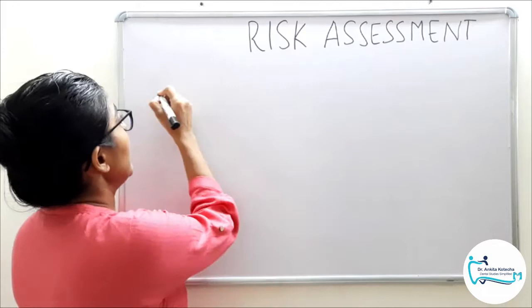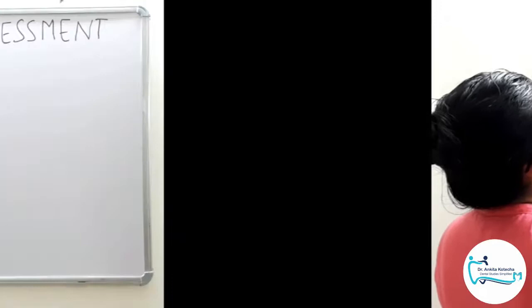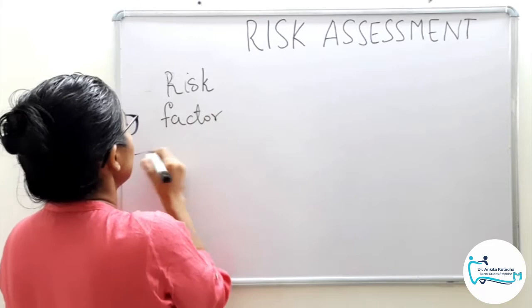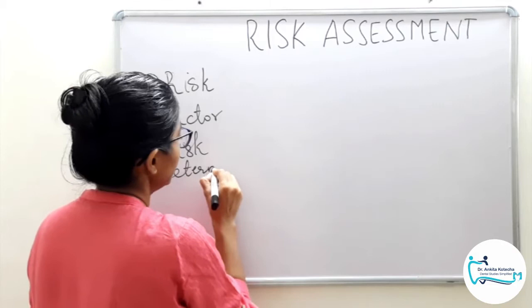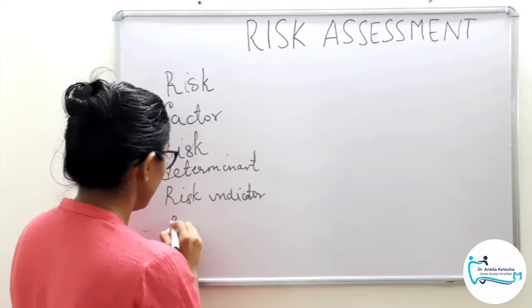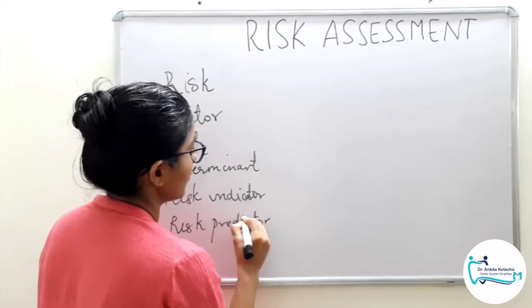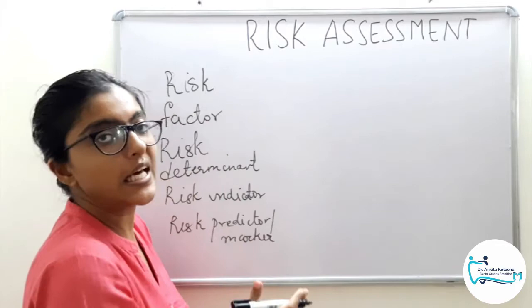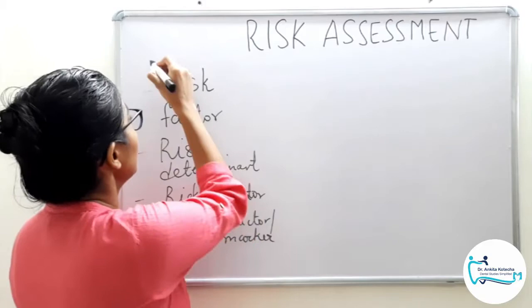First, we will enlist the various terminologies that are used interchangeably. First is Risk Factor. Second, Risk Determinant or Background Characteristic. Third is Risk Indicator. And the fourth and final is Risk Predictor or Marker. These are the four terminologies used interchangeably that are confusing, so we will clarify what each terminology stands for and what message they convey.